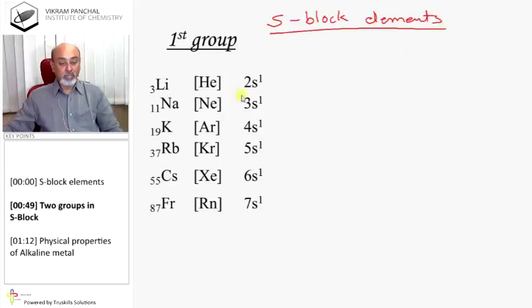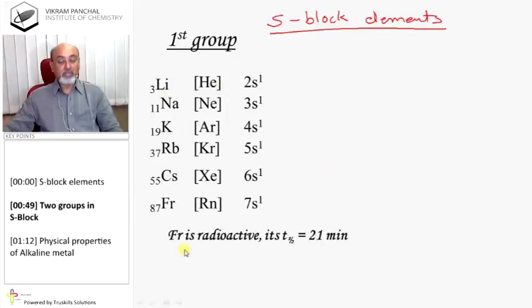Lithium, sodium, potassium, rubidium, cesium, and francium, these are alkali metals. Francium is radioactive and its half-life is 21 minutes.